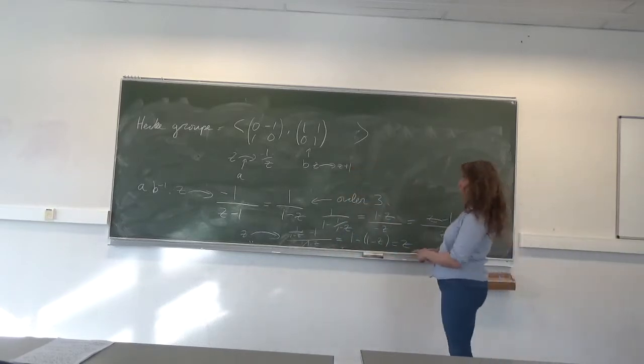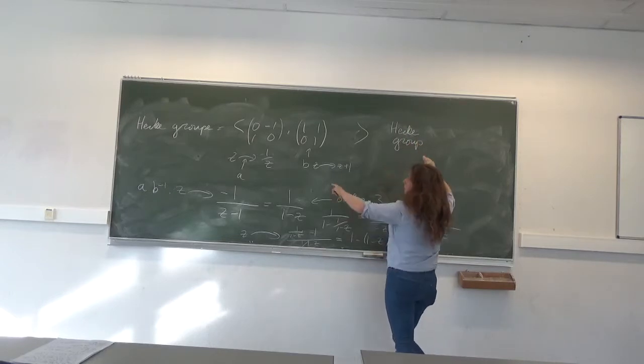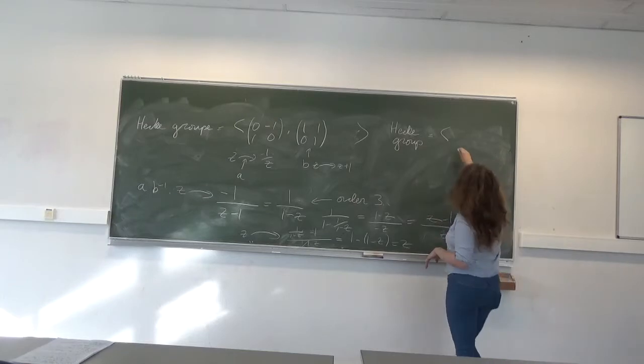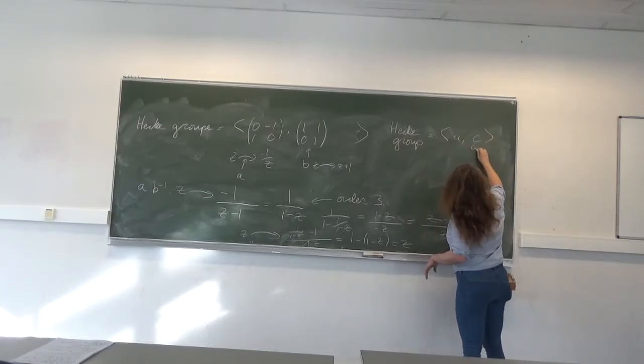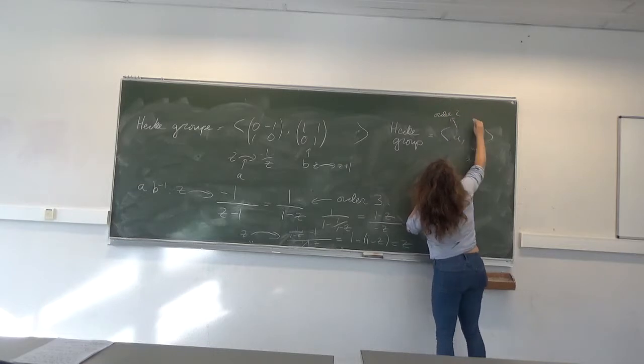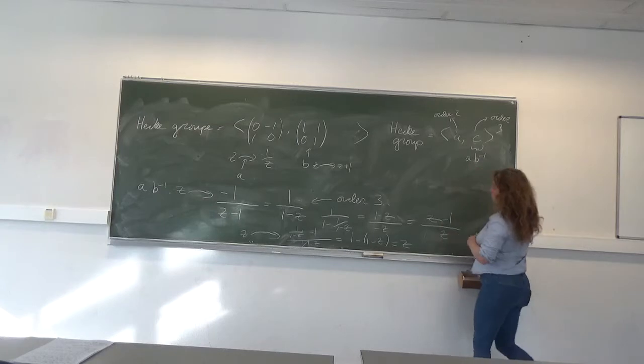So I'm going to think of the Hecke group, instead of as a group generated by a and b, as the group generated by a and ab^(-1). I'm going to call this c, and I know that a is of order 2 and c is of order 3.